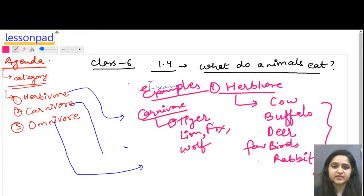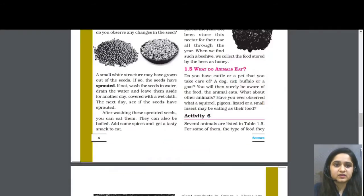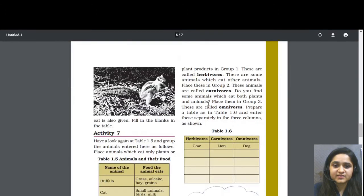Omnivore - human beings. What do we do? Human beings eat plant products, fruits and vegetables, and also meat and chicken. So omnivore. Some birds like crow, bear, and pig. This is the omnivore category.